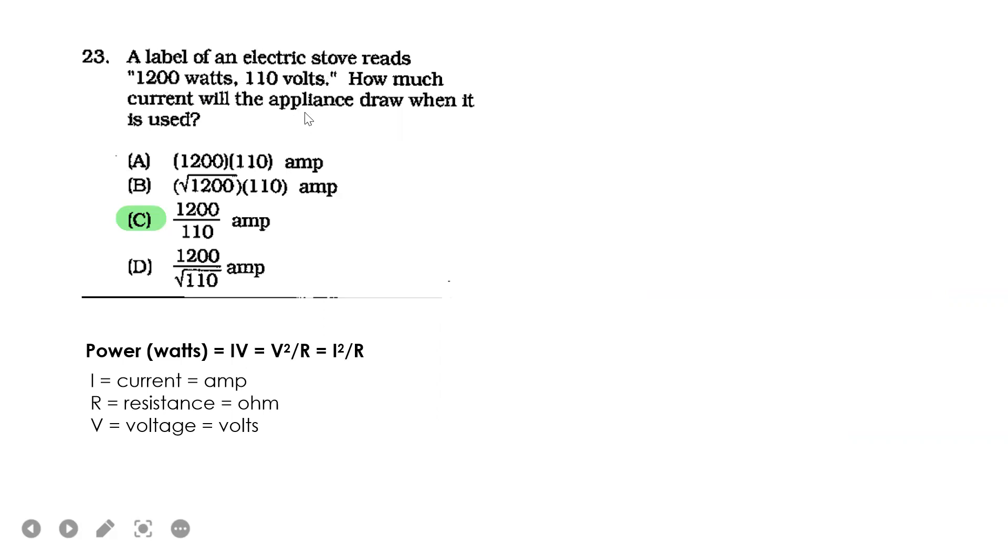Next. A label of an electric stove reads 1200 watts, 110 volts. How much current will the appliance draw when it is used? The answer is 1200 over 110 amperes. Here you just need to remember the formula: power (watts) equals current times voltage.